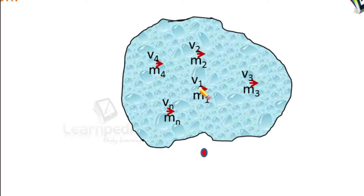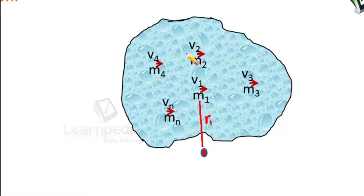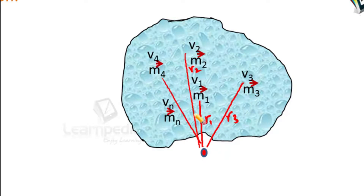Their linear velocities are shown as v1, v2, v3, v4, and vn. Masses of these particles are m1, m2, m3, m4, and so on up to mn. Let us consider this is the axis of rotation about which these particles are going to move. The first particle is at a distance of r1, the second at r2, third at r3, fourth at r4, and the nth particle has a distance of rn.